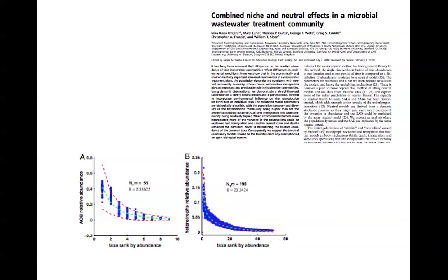This paper shows there's actually a mix of both: niches structure communities to some degree, but there are also neutral effects that can't be attributed to niches — such as random dispersal events or distance to other communities. So there's support for both ideas in ecology, and the relative abundance distribution is the main way of analyzing these different patterns.